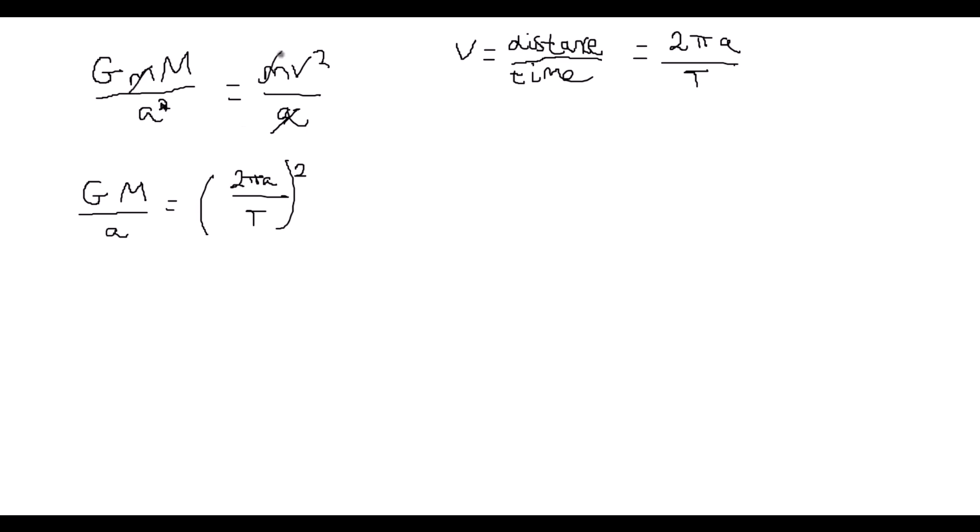Now subbing this in for v and simplifying out an a and a little m gives this expression, or more simply T squared is proportional to a cubed, which is true since all this stuff is just a constant for things orbiting the same body like the sun.